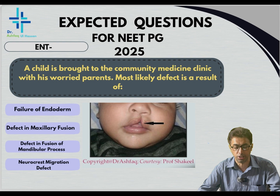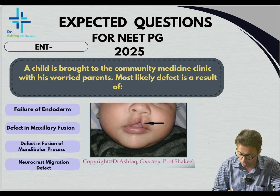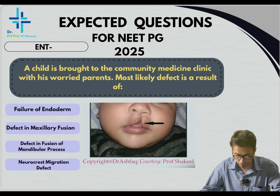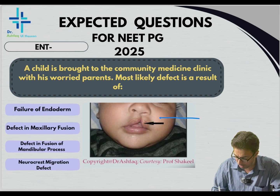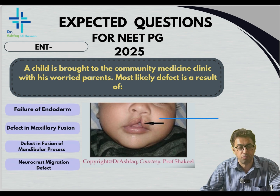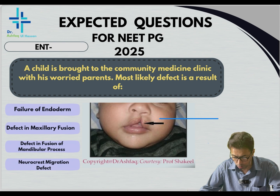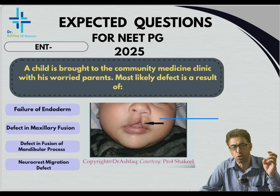This question is from Anatomy. A child is brought to the community midwife clinic with worried parents. The most likely defect is as a result of what? The figure shows a defect indicated by an arrow, and the options are: failure of endoderm, defect in maxillary fusion, defect in fusion of mandibular process, or neural crest migration defect. You have to arrive at the most precise and accurate answer.